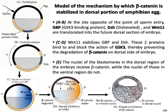Beta-catenin is prevented from degradation by the blocking of GSK3. At the later stage of the blastula (figure E), cells at the dorsal region have beta-catenin represented by colored nuclei, while cells at the ventral region have no beta-catenin because it is degraded. GSK3 is active at the ventral region, while it is blocked by the three proteins — Wnt11, Dishevelled, and GSK — at the dorsal region. That is why beta-catenin is active in the nuclei of the dorsal region.